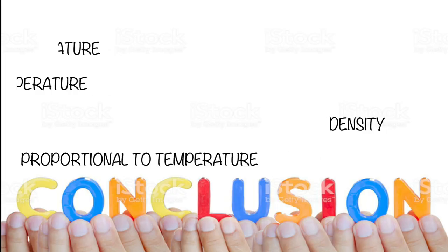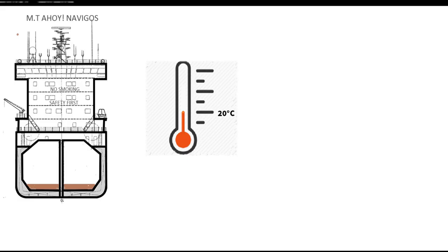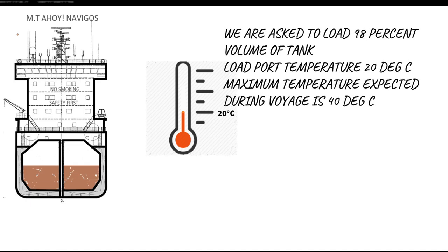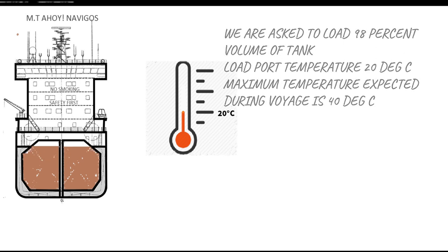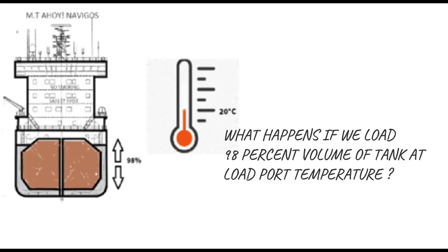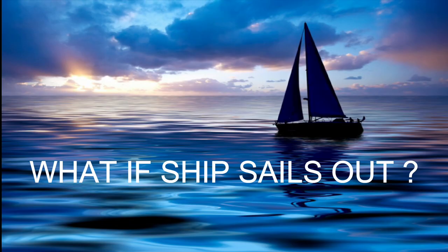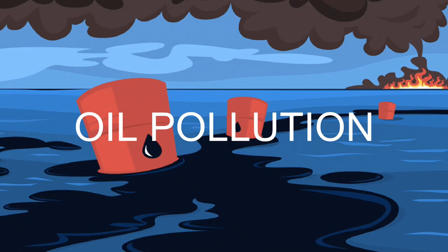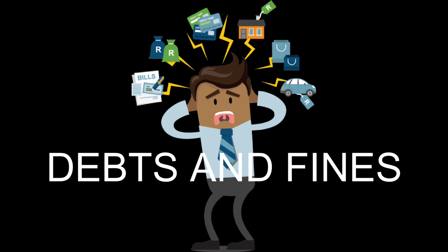Consider this scenario: we load a tank to 98% volume at a load temperature of 20°C. The maximum temperature expected during the voyage is 40°C. If the ship is at sea and temperature rises to 40°C, volume increases, the tank ruptures and overflows, causing severe oil pollution and leading to heavy fines for the ship owner and crew.